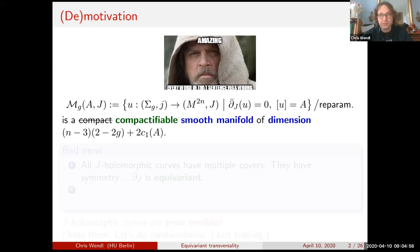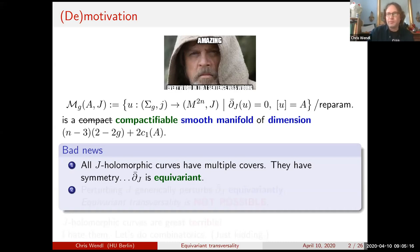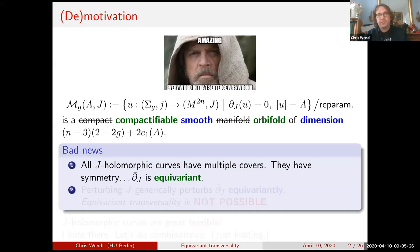There's worse news coming. Every J-holomorphic curve has a multiple cover, and those multiple covers have symmetry built in, so the d-bar operator's zero set is always equivariant. If you have to divide by finite group actions, you won't always get a manifold — you'll sometimes have finite stabilizer groups. The best you could hope for is a smooth orbifold of the right dimension. But being really honest about the analysis, you must add a caveat: this is true — compactifiable smooth orbifold of dimension blah blah — if the d-bar operator is transverse to the zero section, meaning the moduli space is transversely cut out.